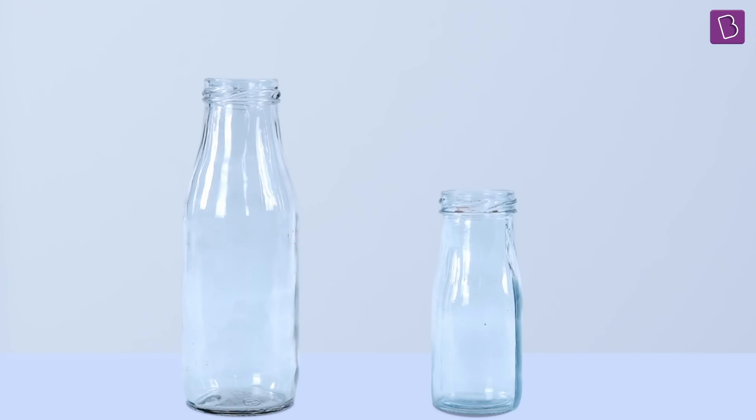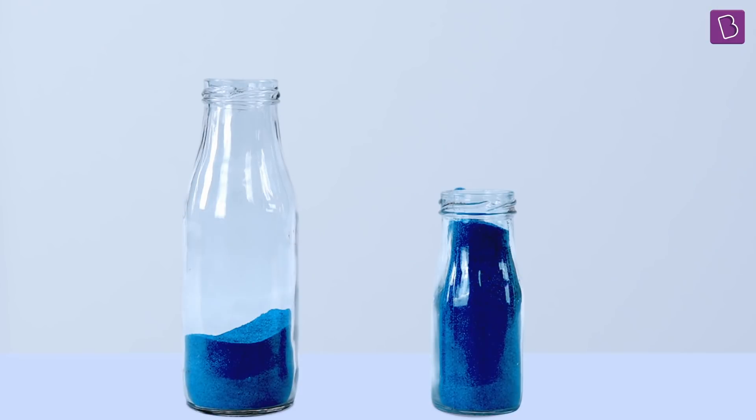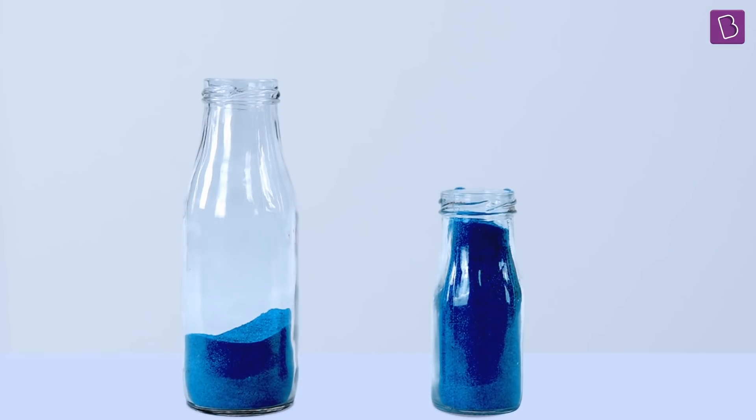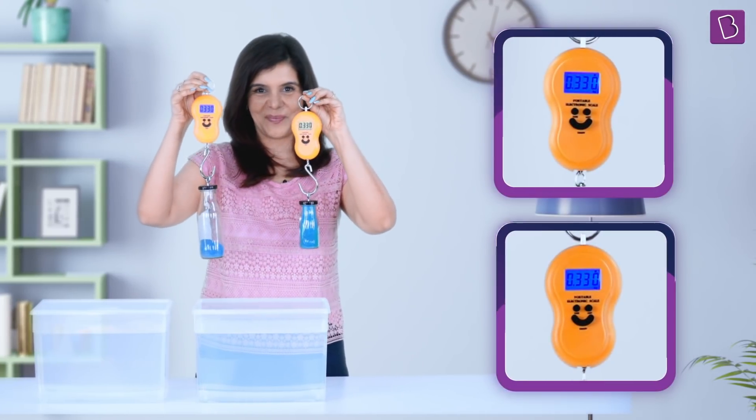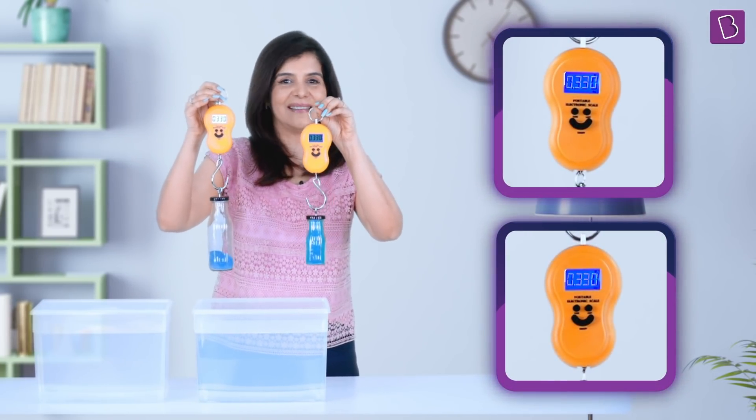Okay, instead of giving you the answer, how about I show you a small experiment. Let's take two bottles and I have put some blue sand in them. I put different amounts of sand to ensure that the final weights of the two bottles are equal. And there you go. Notice that the two bottles are now weighing the same.